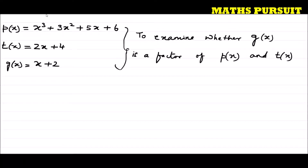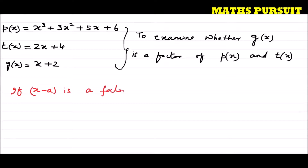In order to examine this, let us recall our factor theorem. The factor theorem states: if x minus a is a factor of the polynomial p(x), then p(a) is equal to 0.